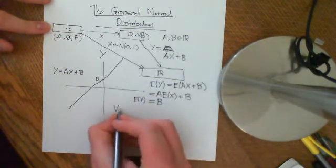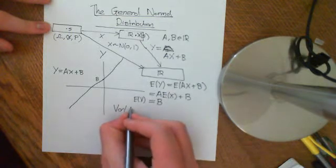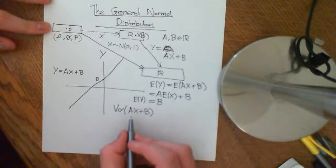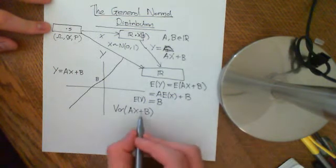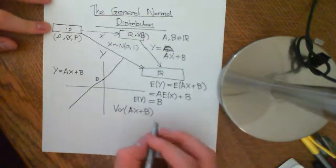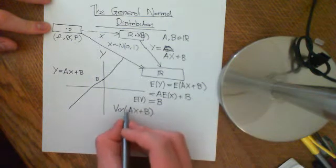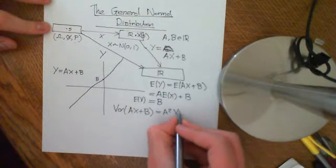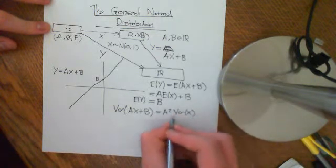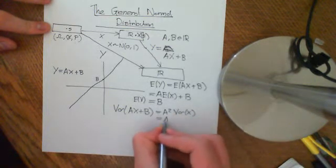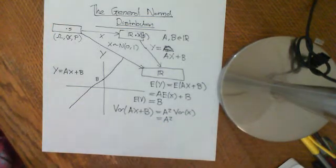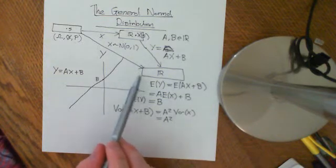We'd also like to know what the variance of aX plus b is equal to. We have seen from properties of variance that the constant b doesn't affect it at all, but multiplying by a does affect it, so you get that it's equal to a squared times the variance of X. Since the variance of X is 1, we get that the variance of aX plus b is equal to a squared.